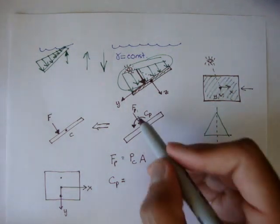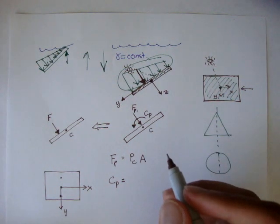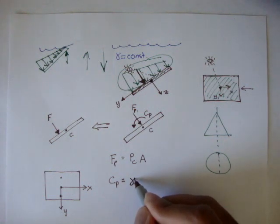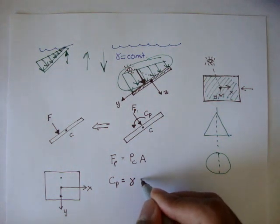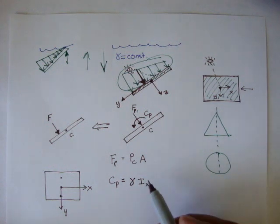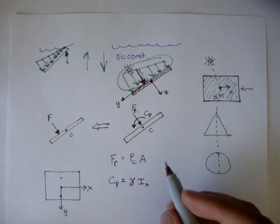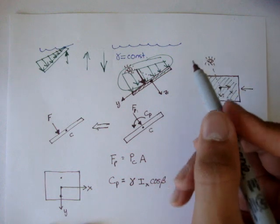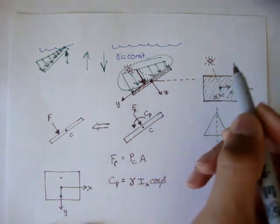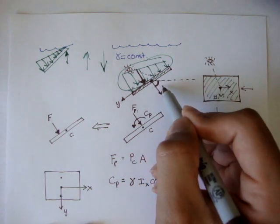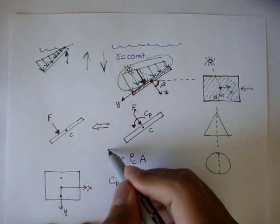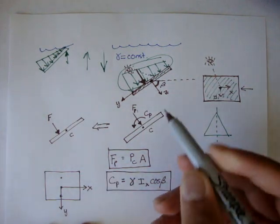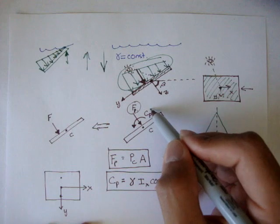To find this couple, the formula to find this couple is the specific weight of the fluid that's touching the gate, times the second area inertia, and I'll say that's around the x-axis, times cosine beta. And beta, if this was a horizontal line, this angle right here, that's beta. So these are the two formulas we can use to find this and this.